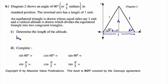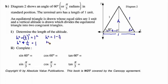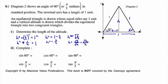We have h squared plus one half squared equals 1 squared. So h squared plus 1 quarter equals 1. Solving for h, h squared equals 1 minus 1 quarter, so h squared equals 3 quarters. Taking the square root, h equals the square root of 3 over 4, which simplifies to the square root of 3 over 2. Using the principal square root, the altitude is root 3 over 2.